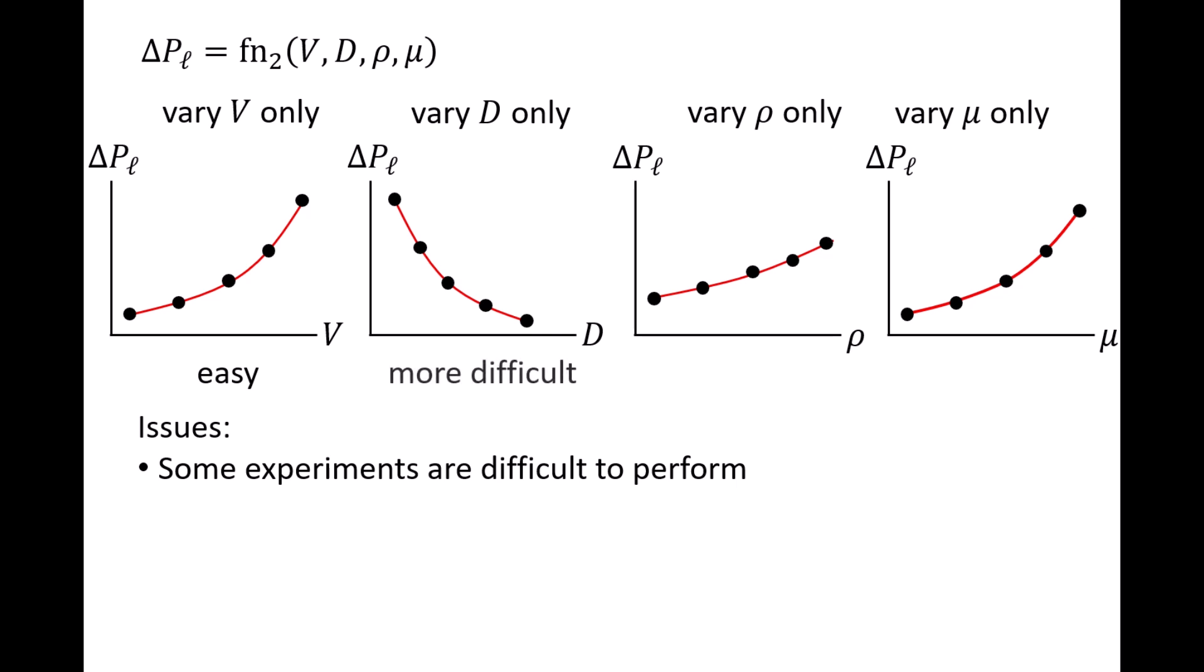The second experiment would be a bit more difficult to perform, as it would require both changing the pipe diameter by swapping out pipes of different sizes, and adjusting a valve to ensure the flow speed v is held constant. But the biggest challenge would be figuring out how to vary the fluid density rho and absolute viscosity mu independently of each other in the third and fourth experiments.